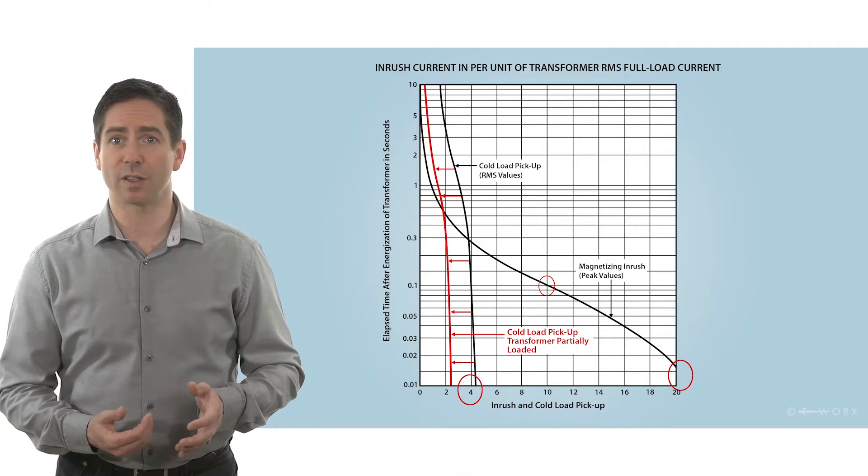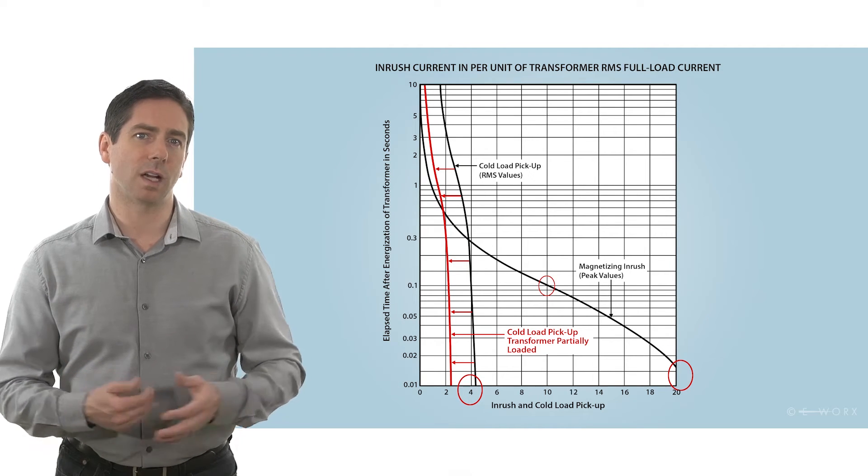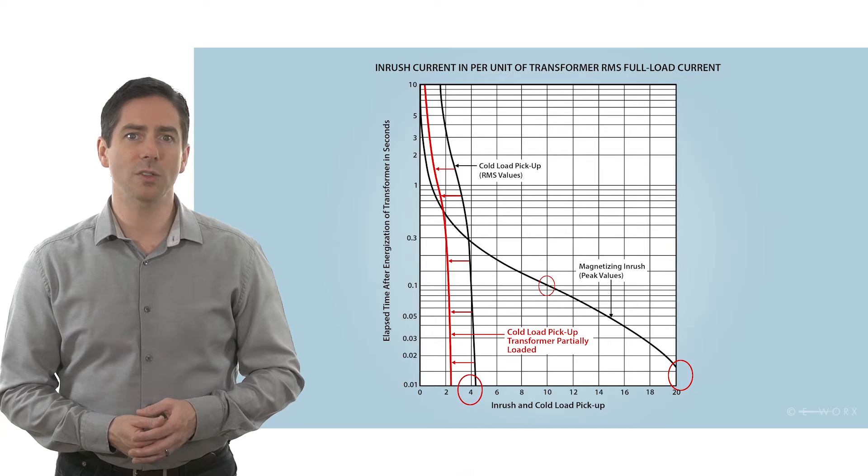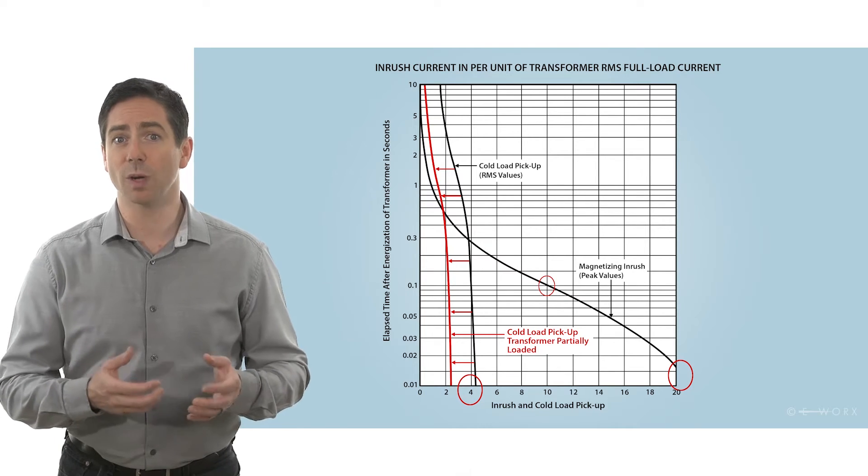Transformers aren't loaded at their full rating so the multiplier for cold load pickup is also applied to the pre-interruption load.